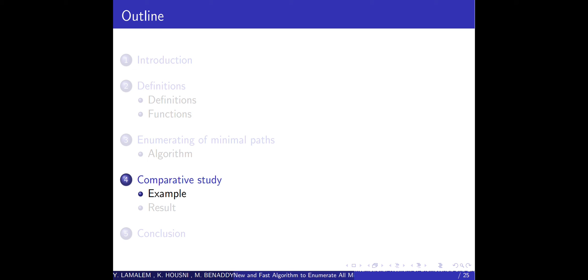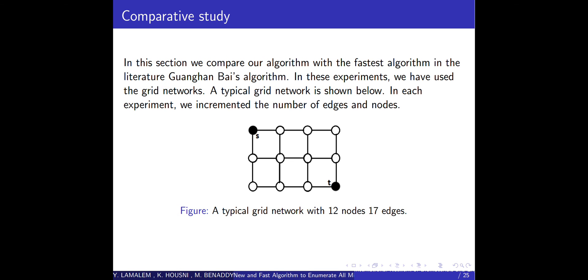Now we have a comparative study of the algorithm. In this section, we compare our algorithm with the phase algorithm in the literature, the Ganggan Bay algorithm. In this experiment, we have used the grid network. A typical grid network is shown below. In each experiment, we incremented the number of edges and nodes.